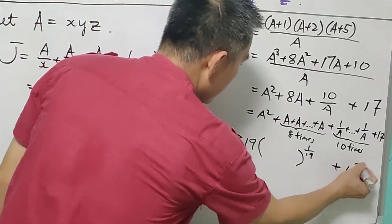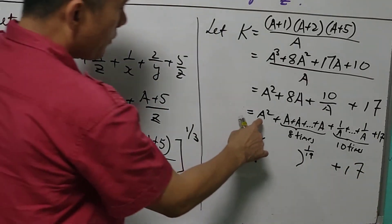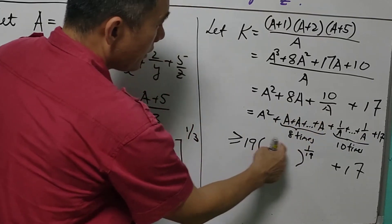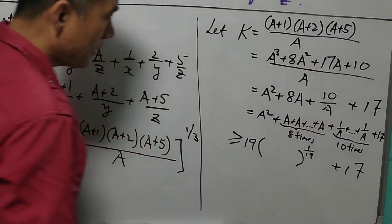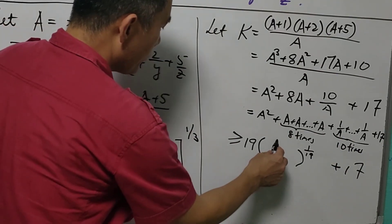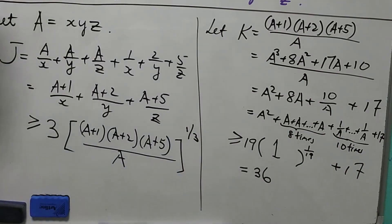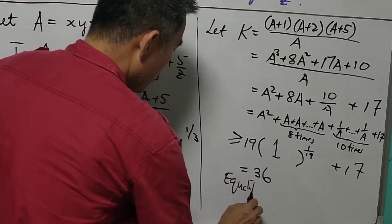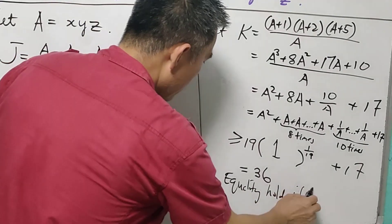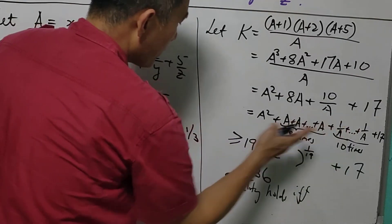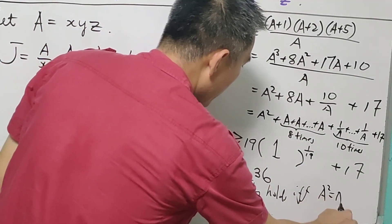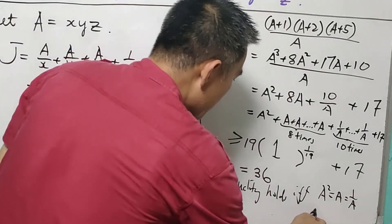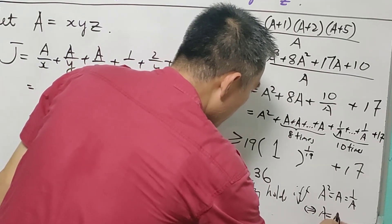When we multiply everything, we get A² times A to the power of 8 times 1 over A to the power of 10 — they all cancel and we are left with 1. So this gives 19 + 17 = 36. We now know K is at least 36. Equality holds if and only if each of the terms is the same, meaning A² equals A equals 1 over A, which means A must equal 1.